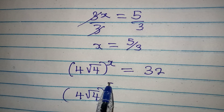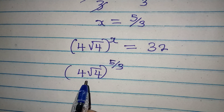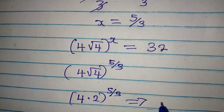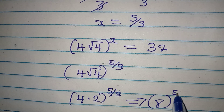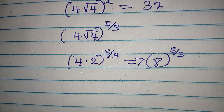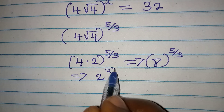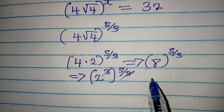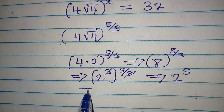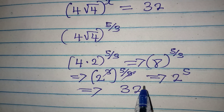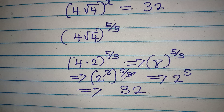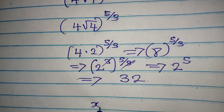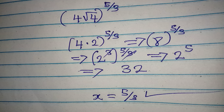Substituting, we get 4 times 2 to the power of 5 over 3, which equals 8 to the power of 5 over 3. Since 8 is 2 to the power of 3, this becomes 2 to the power of 3 times 5 over 3. The 3s cancel, giving 2 to the power of 5, which equals 32 — matching the right-hand side. This confirms that x equals 5 over 3 is correct, as it satisfies the equation.